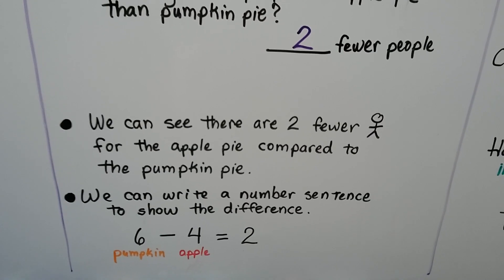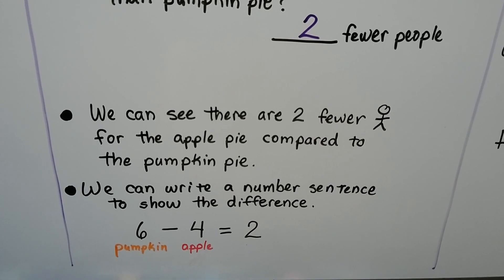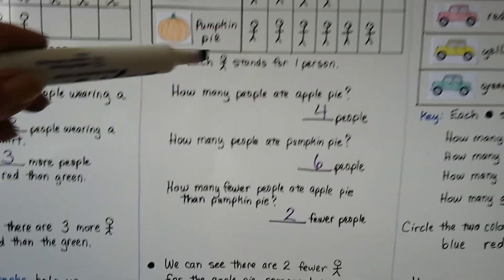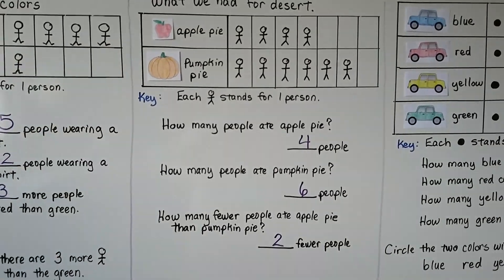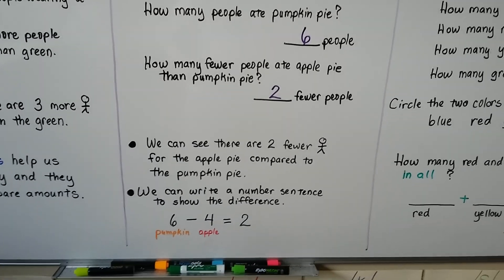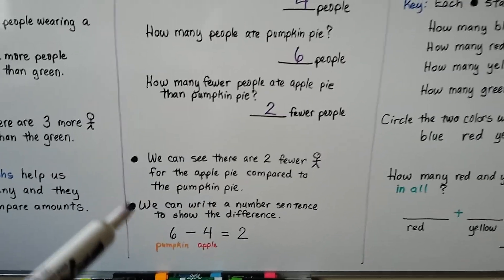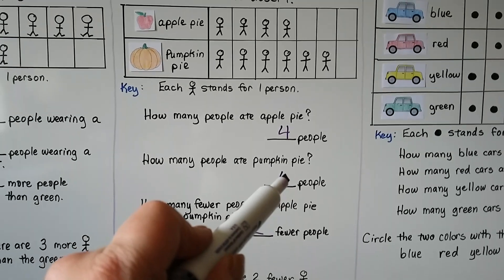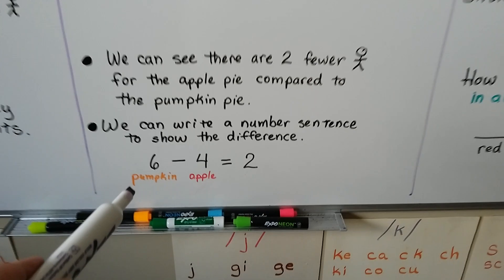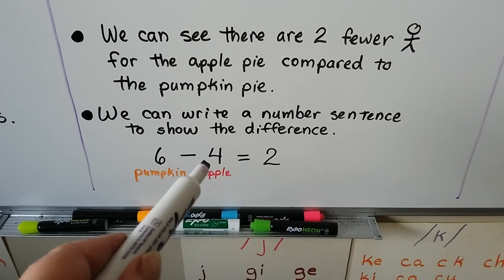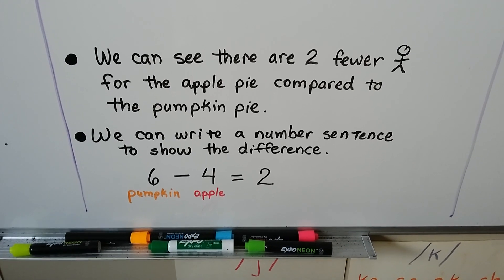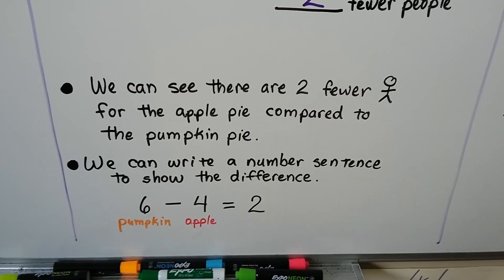Two fewer people ate apple pie than pumpkin pie. We can see there are two fewer stick people for the apple pie compared to the pumpkin pie. It's very easy to see it with a picture graph. We can write a number sentence to show the difference: there were six pumpkin and four apple. Six minus four is equal to two, so there were two fewer.